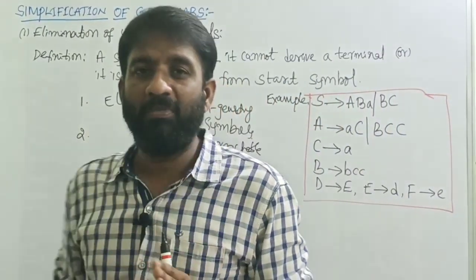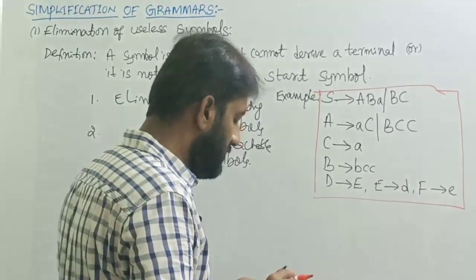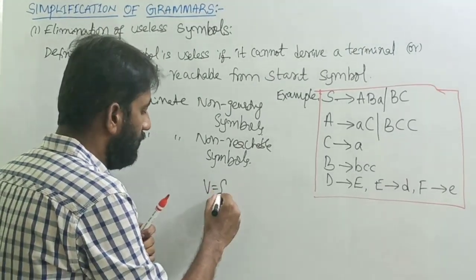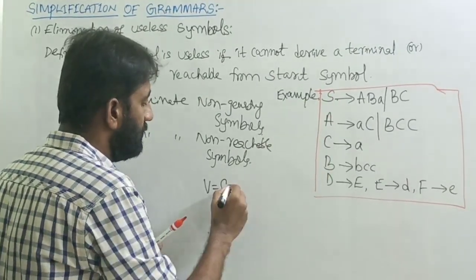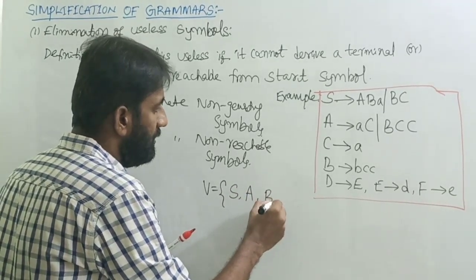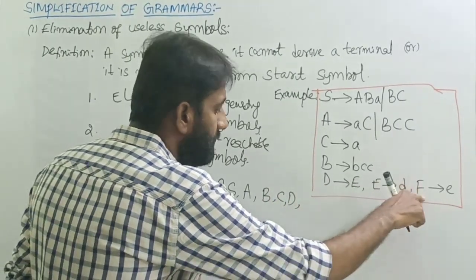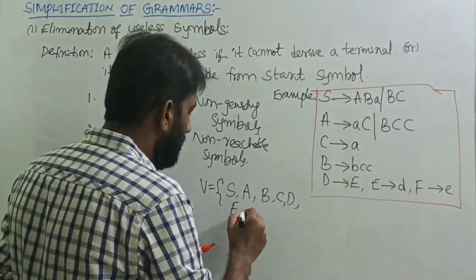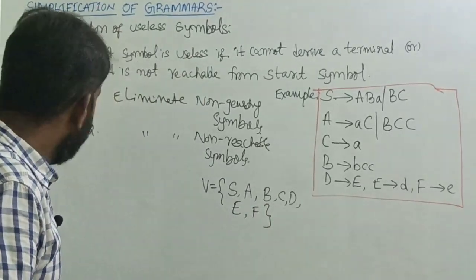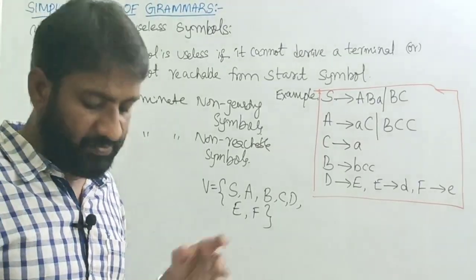First, identify what are the variables — the non-terminals — in the grammar. The variables are: capital A, capital B, capital C, capital D, capital E, and capital F. As per the first step, try to identify what are the non-generating symbols — meaning a symbol which is not generating any terminals is a useless symbol.